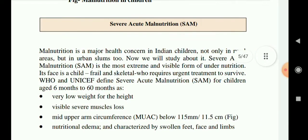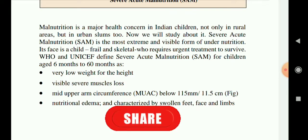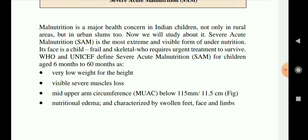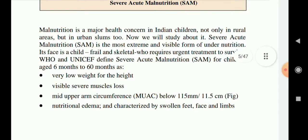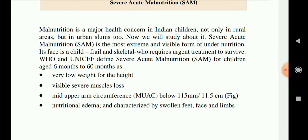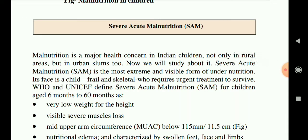Severe Acute Malnutrition (SAM) is a major health concern in India, not only in rural areas but in urban slums too. It is the most extreme and visible form of under-nutrition, leaving a child frail and skeletal and requiring urgent treatment to survive. WHO and UNICEF define SAM for children aged 6 to 60 months as: very low weight for height, visible severe muscle loss, mid-upper arm circumference below 115 mm (11.5 cm), and nutritional edema.